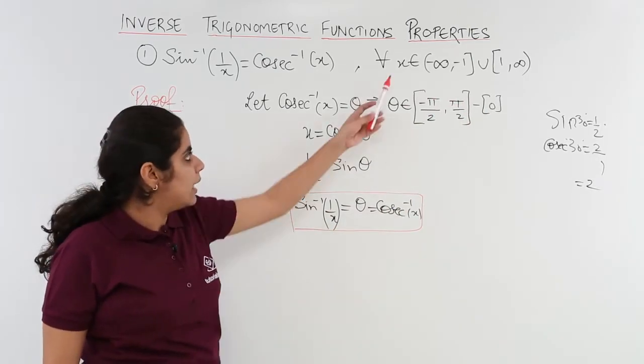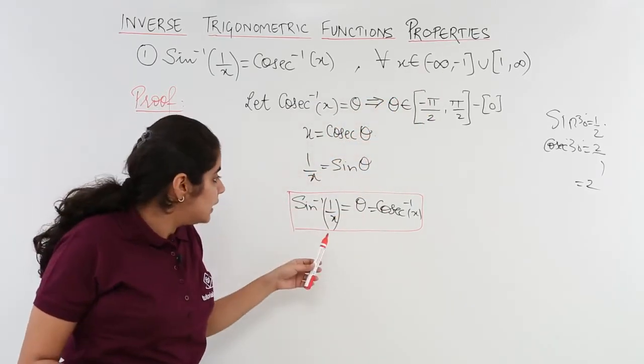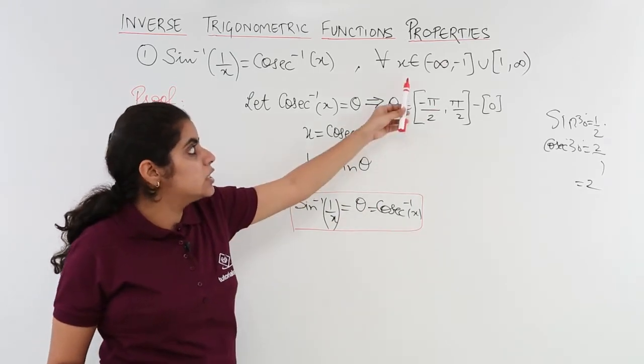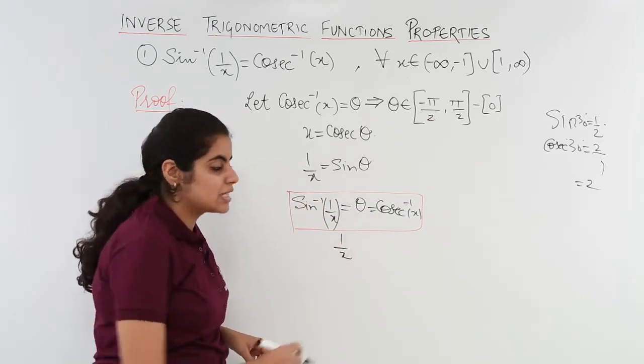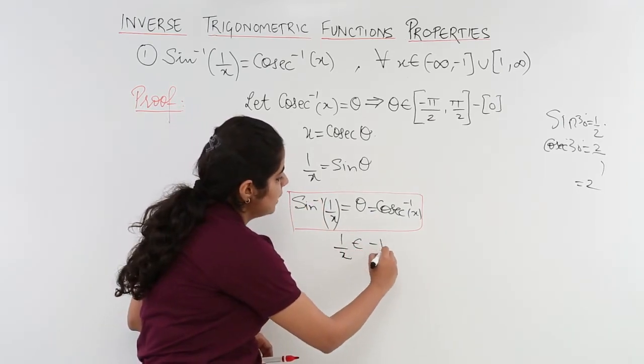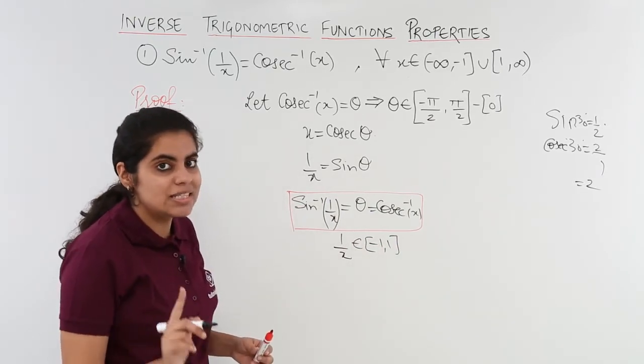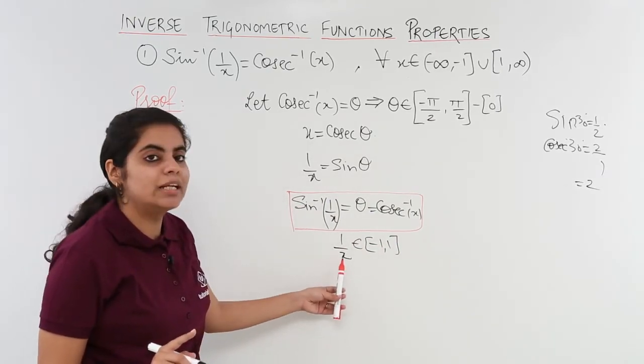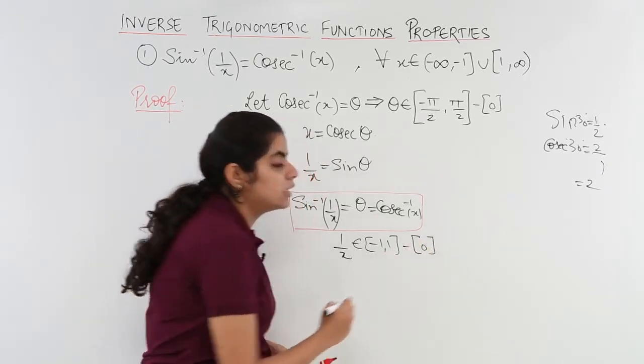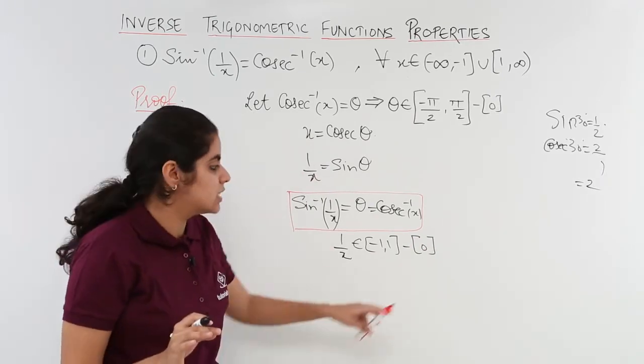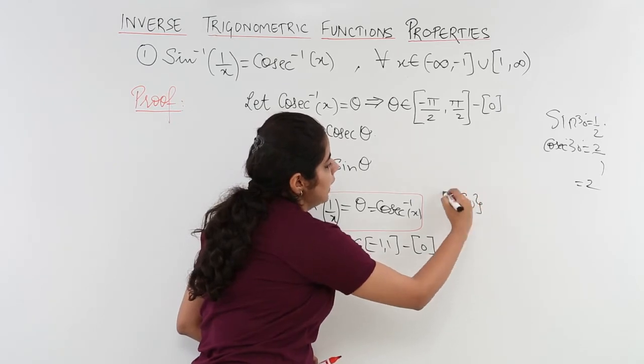Also I know that my x belongs to minus infinity to minus 1 union 1 to infinity. So in case of x the interval is given to me, but what about 1 by x? So my 1 by x would belong to minus 1 to 1 because it is the case of sin, but again 0 is not included because denominator becomes 0. The things are not defined. So my 0 won't be included. You can also place 0 not in this bracket but in a bracket called curly bracket. Both are fine. Both the things are correct.